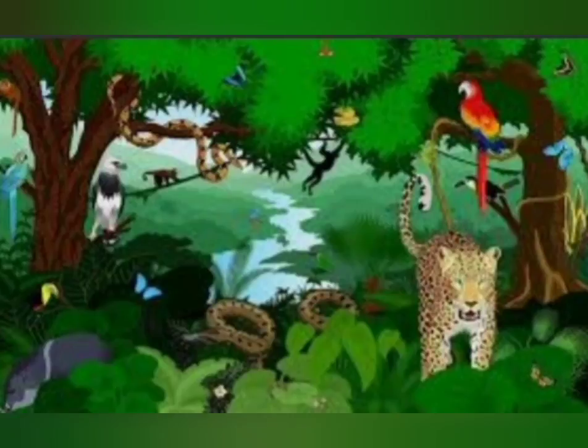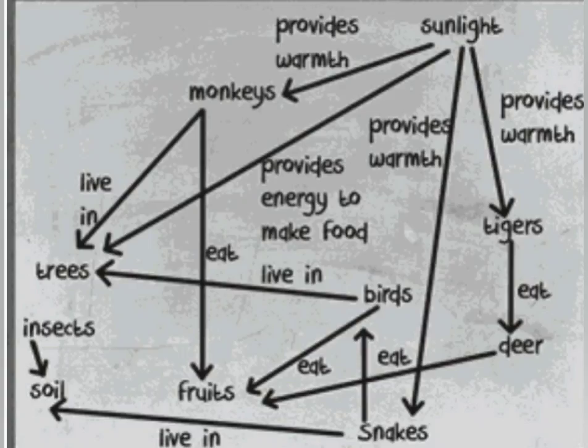Soil is needed for trees to grow and to provide a home to some animals. Water is needed for all living things to survive. Sunlight helps living things grow and provides warmth. Trees provide food and homes to various animals. Fruits are eaten by many herbivores.